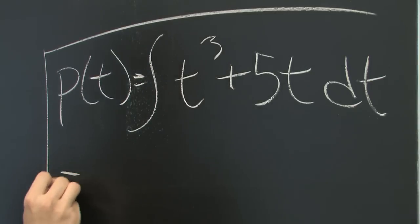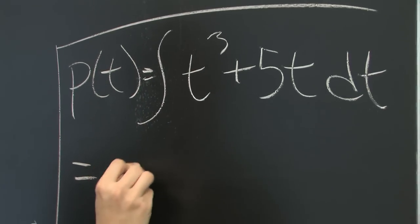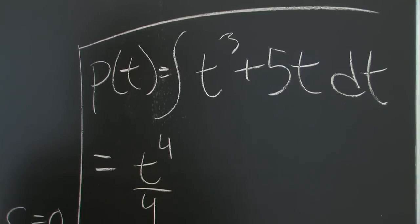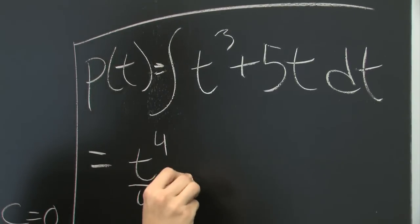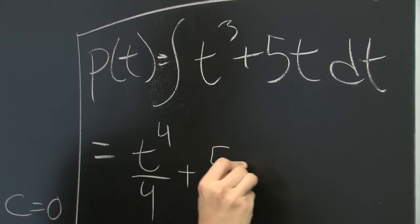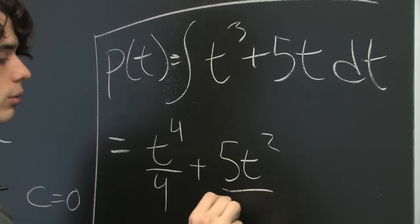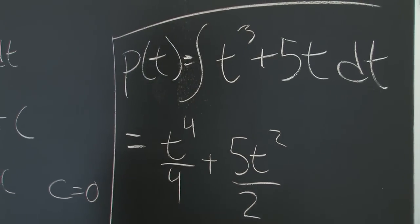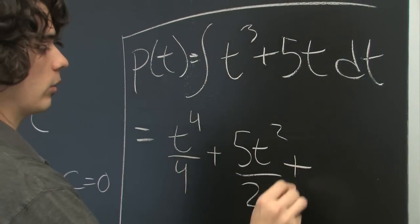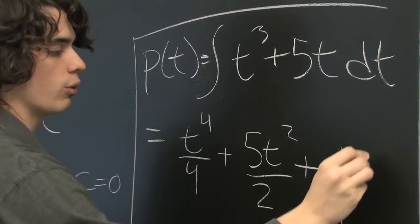So, let's go ahead and compute that. We get t to the fourth over 4, plus 5t squared over 2, plus some unknown constant. This time, we'll call it k, just to avoid confusion.